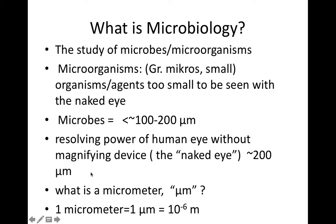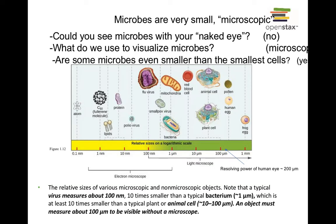This resolving power of the human eye without a magnifying device — the so-called naked eye — is around 100 to 200 micrometers. It will be important throughout the course to know the value of a micrometer, which is 10 to the negative sixth meter. One micrometer is the average size of a so-called average bacterium, like E. coli. For many years, historically, people didn't know about microbes because they were so small. If I can't see it, I won't believe in it. This contributed to a lot of suffering and lack of progress early on in microbiology because we didn't have microscopes.